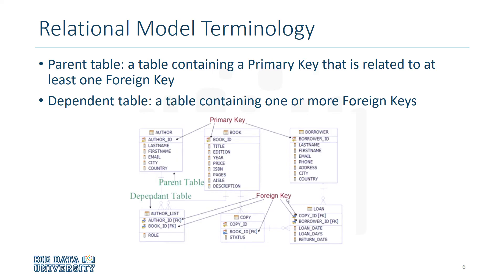Let's learn a couple of new terms used in a relational model. A table containing a primary key that is related to at least one foreign key is called a parent table. In the example, the author entity is the parent table, and the book entity is also a parent table. A table containing one or more foreign keys is called a dependent table, which might also be referred to as a child table.